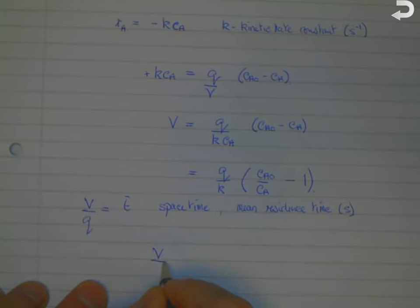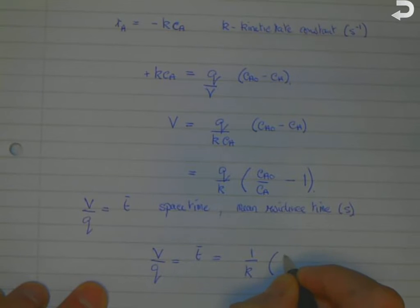You can rearrange the equation to get V/Q = τ = (1/k)(CAo/CA - 1). This is another form of the same equation using the residence time parameter, which is a characteristic quantity of a CSTR.